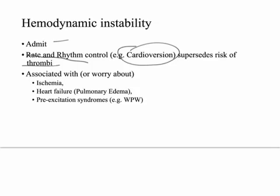Hemodynamic instability is associated with ischemia, heart failure, pulmonary edema, and cardiogenic shock. Another thing to think about is pre-excitation syndromes, such as Wolff-Parkinson-White. If you have an accessory electrical pathway and atrial fibrillation is conducting down to the ventricle, causing the ventricle to go into flutter or fibrillation, you'll have no blood pumping at all.